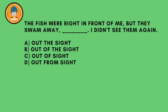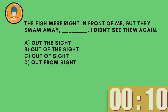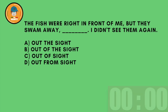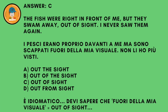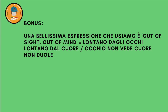The fish were right in front of me, but they swam away. I didn't see them again. A: out the sight. B: out of the sight. C: out of sight. D: out from sight. And the answer is C — out of sight. È idiomatico — devi sapere che fuori della mia visuale in queste frasi è 'out of sight.' Bonus expression: out of sight, out of mind — lontano degli occhi, lontano del cuore.